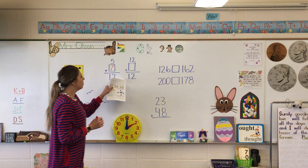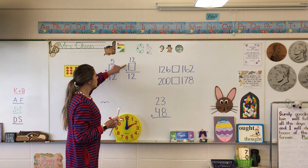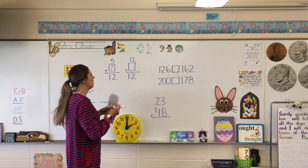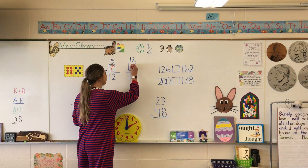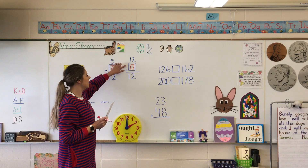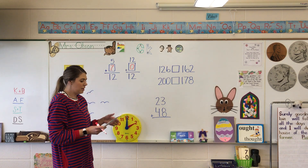And then if we move to the next one, 12 plus what equals 12? You all know that one — a big old goose egg, 0. So 12 plus 0 equals 12.